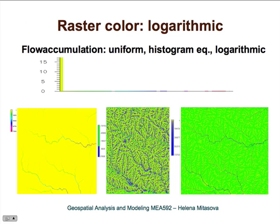Another option is to use a logarithmic color table. For some applications, this may be the right choice because you get to distinguish the major rivers and major streams, while still retaining information about the smaller streams that was missing in the uniform interval map.